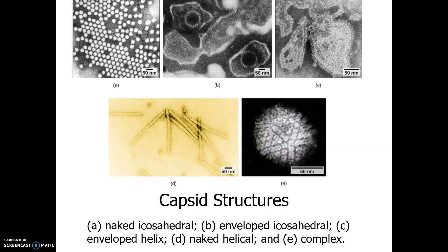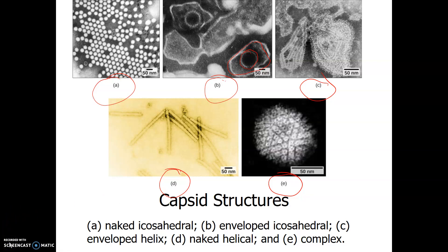Here are visual examples: image A is naked icosahedral, image B is enveloped icosahedral — you can see the capsid with the envelope outside of it, image C is enveloped helical, image D is the tobacco mosaic virus which is naked helical, and image E is an example of a complex capsid structure. These images show viruses classified by their capsids and envelopes.